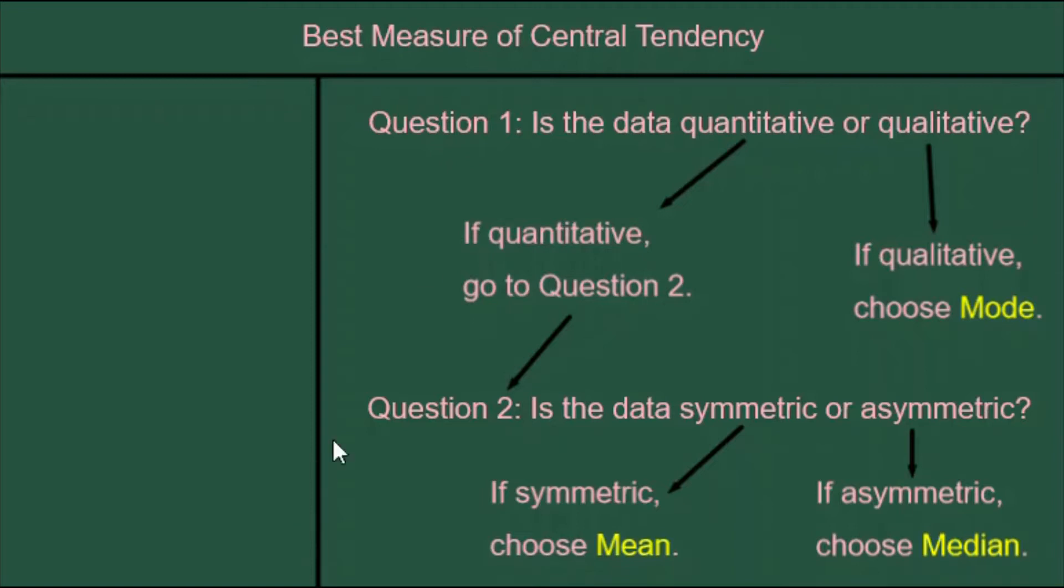In another video, I explained that if we ask ourselves these two questions, then the answers tell which of mode, mean, or median we want to choose as the best measure, and the answers also justify our choice. Let's put this to the test with a few situations.